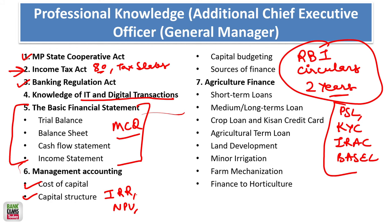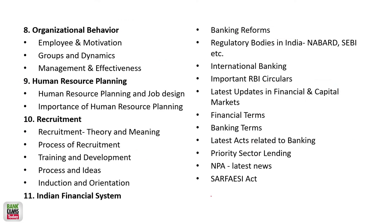The most important part here is the Banking Regulation Act — you'll find a lot of questions from it. Most of the time there are questions from cash flow statement and balance sheet — basic understanding. In agriculture finance, Kisan Credit Card and government schemes are most important. In organizational behavior, employee motivation is the most important part. In human resource planning and recruitment, the types of training, process of recruitment, and training and development process are important — on-the-job and off-the-job training.